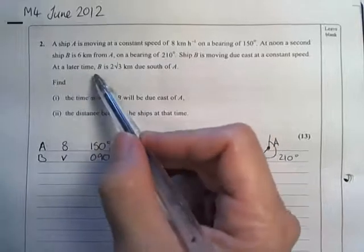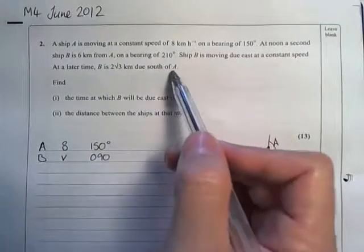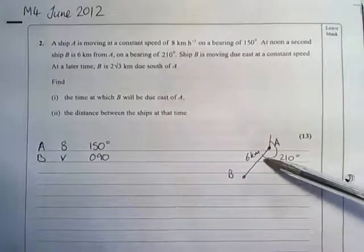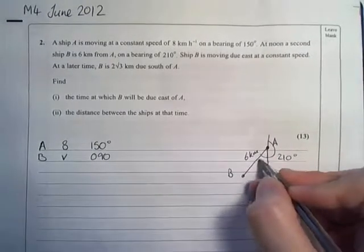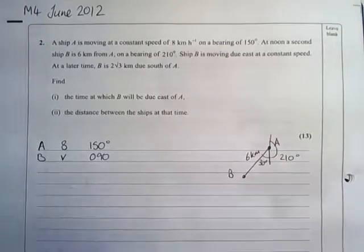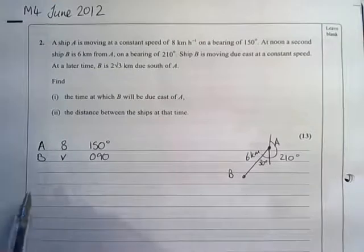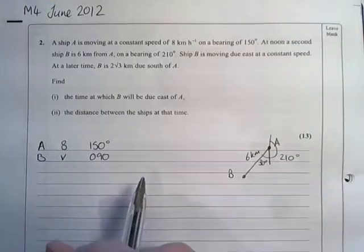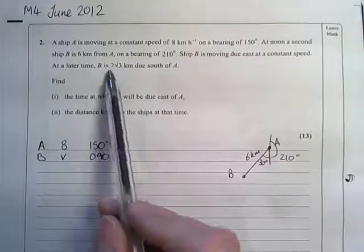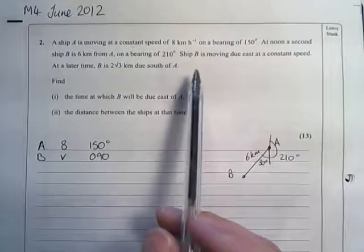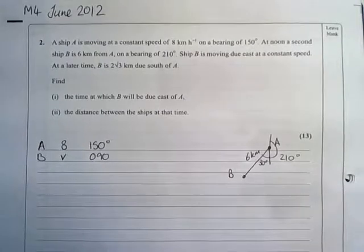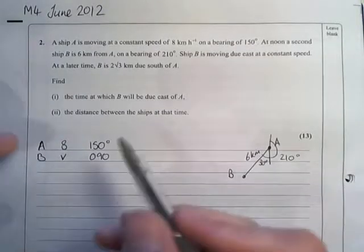At a later time, B is 2 root 3 due south of A. As all of the angles are quite nice, because this angle here will be 30 degrees, I'd be tempted to try to do this question in vectors. When they give you something like that one particle is due south or due east or west of another particle, that lends itself to looking at the I components or the J components.